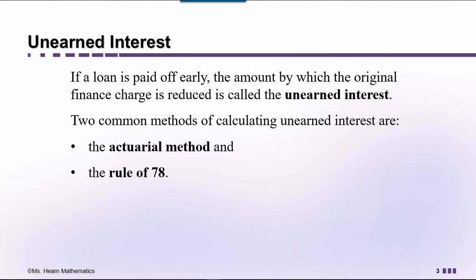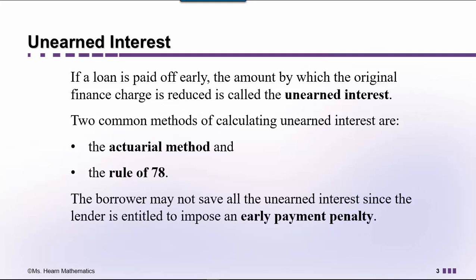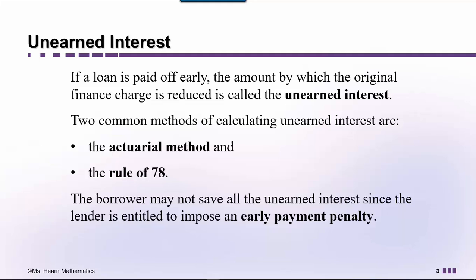Now a borrower might not save all the unearned interest, since the lender is entitled to impose an early payment penalty. We're going to be calculating the unearned interest. We won't use the actuarial method, but that is discussed in another video, and a link will be provided at the end of this video. We are going to look at how to calculate unearned interest using the rule of 78.